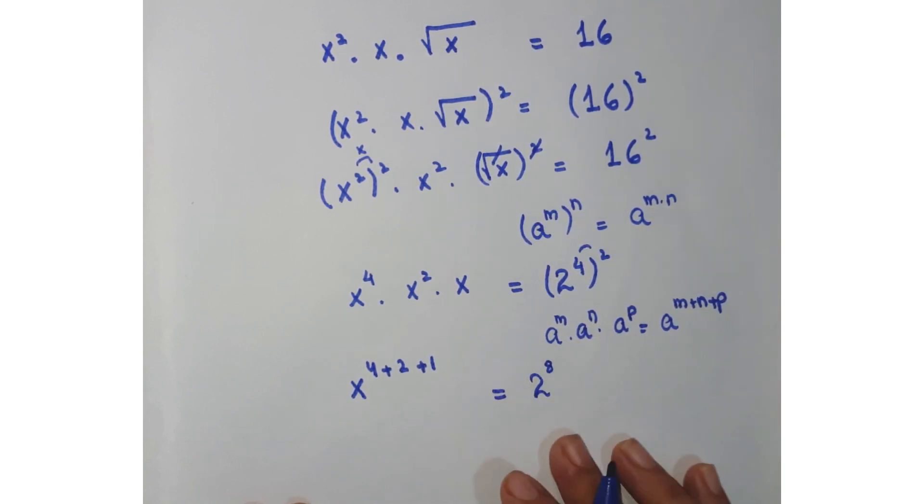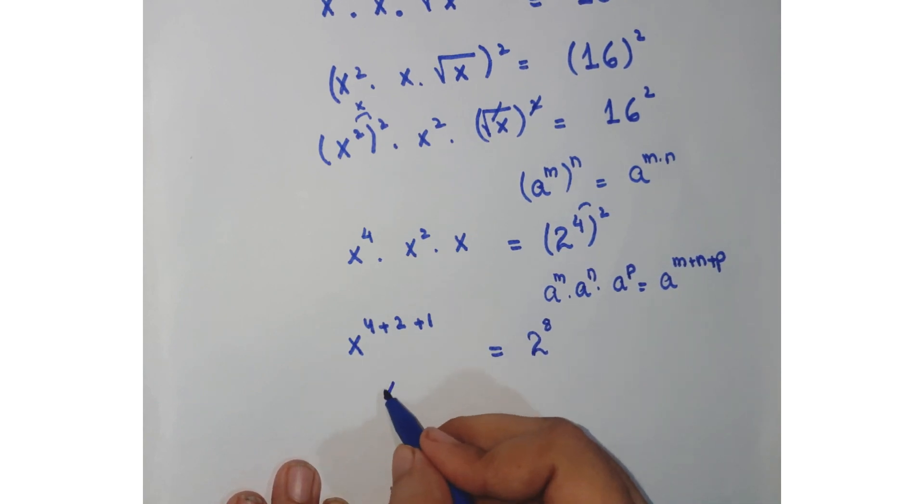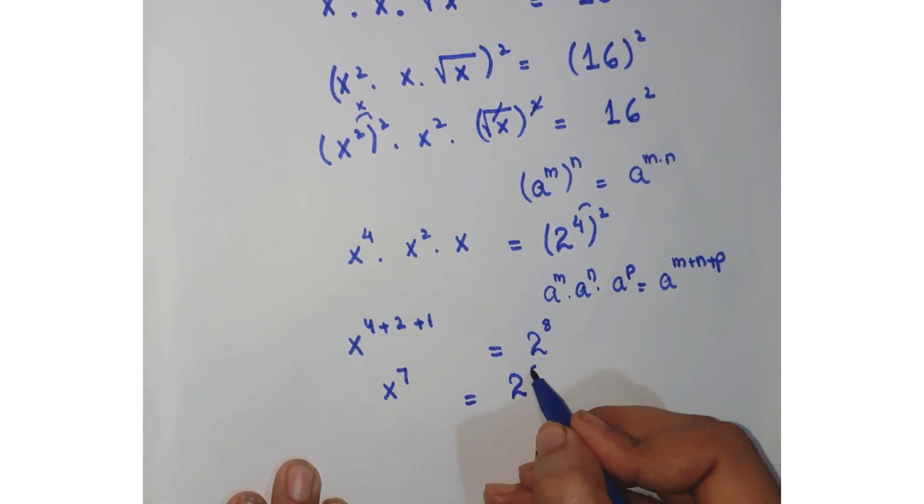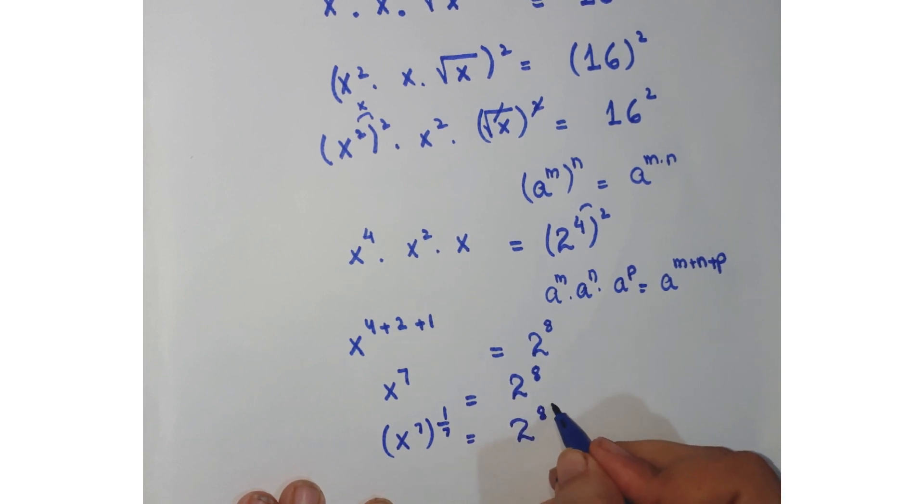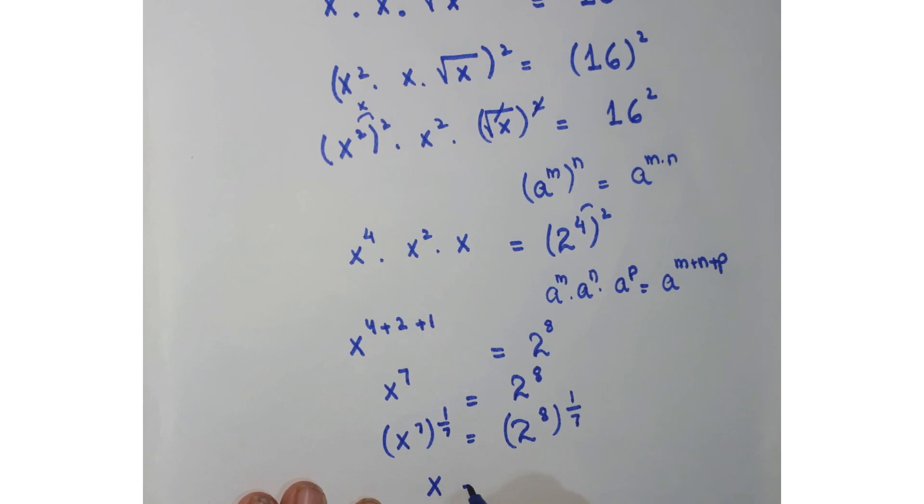Here you get x⁷ = 2⁸. Now taking 1/7 power on both sides, you get 2^(8/7) and here x is—this value and this is cancelled.